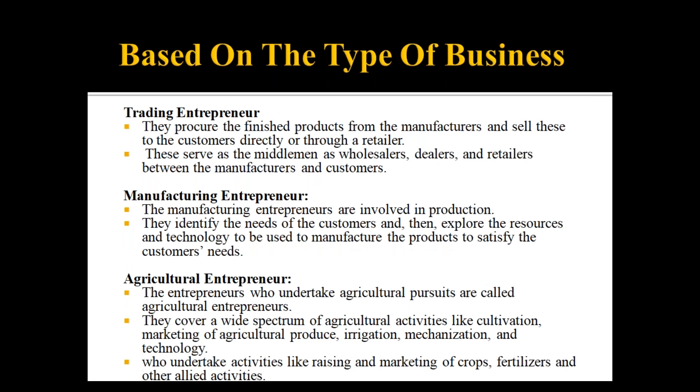First, based on the type of business, there are three types: trading, manufacturing, and agricultural entrepreneur. Trading entrepreneurs are those who procure finished and final products from manufacturers and sell these to customers directly or through a retailer. They serve as the middleman — a wholesaler, dealer, or retailer — acting as the link between manufacturers and customers.